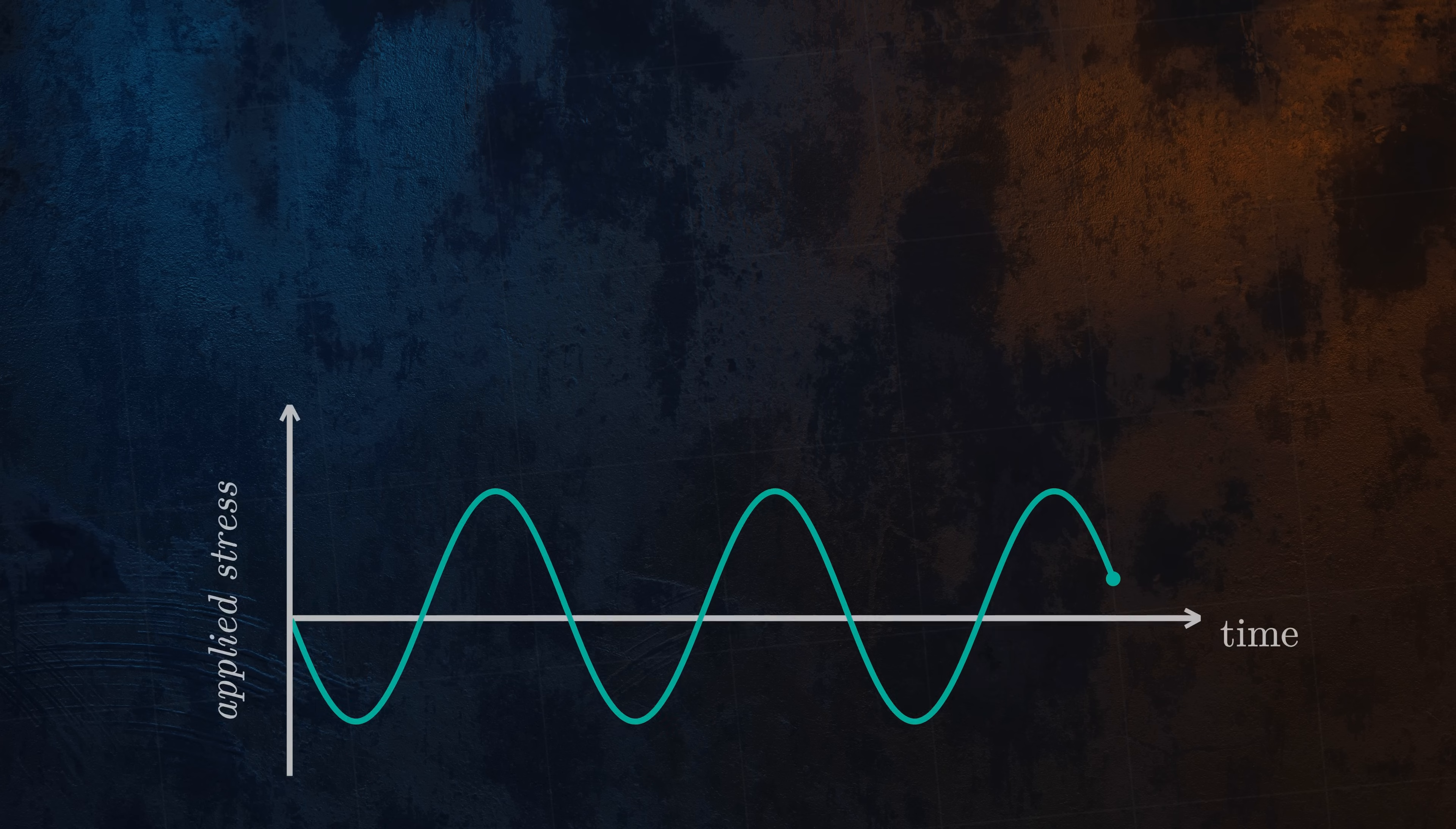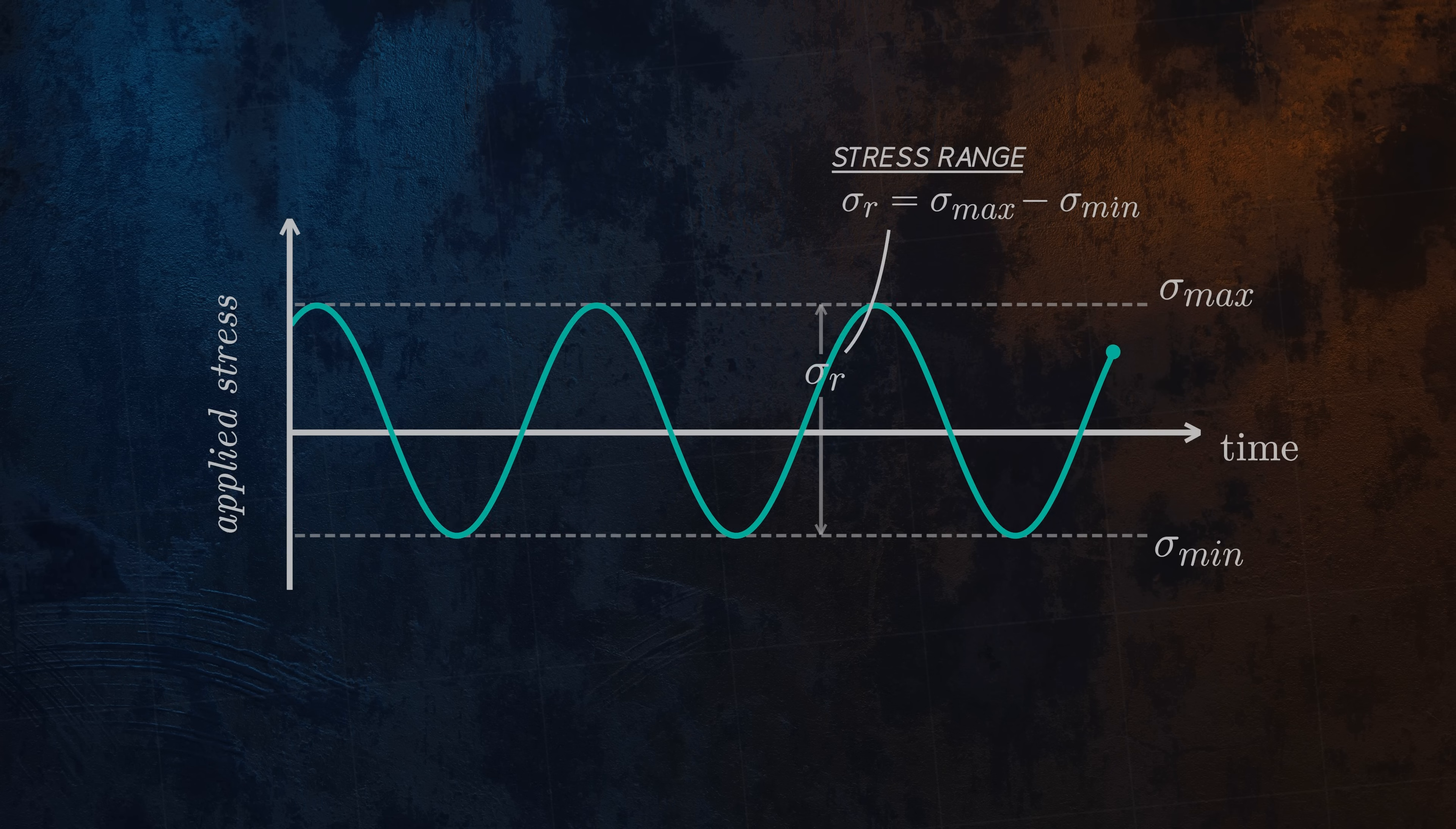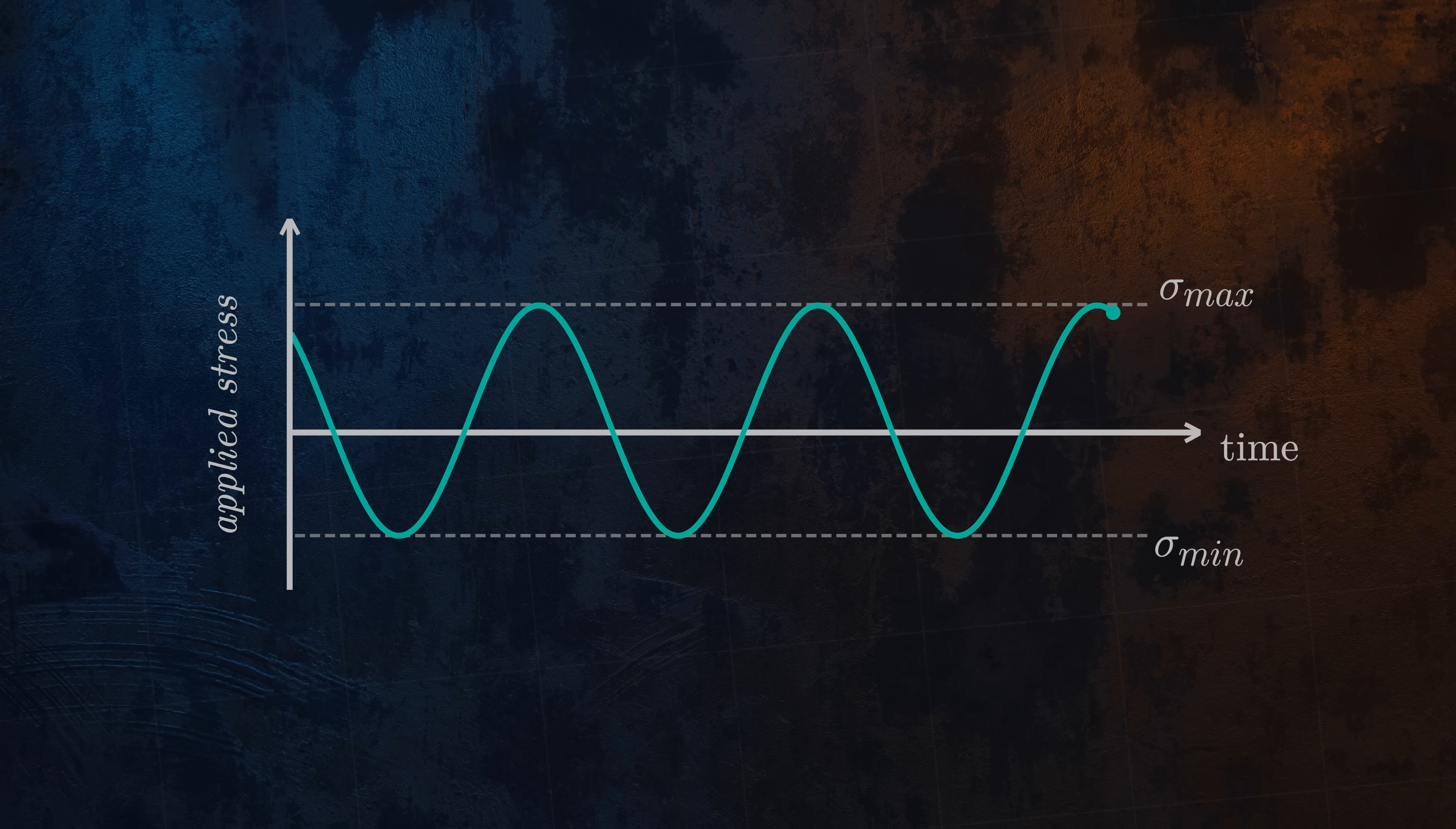Fatigue tests are usually run for constant amplitude, fully reversing cycles you can see here. The same stress magnitude is applied in tension and in compression. Let's define a few terms. The stress range is defined as the difference between the maximum and minimum stresses. The stress amplitude is defined as half of the stress range. The mean stress is the average of the maximum and minimum stresses. In this case, the mean stress is zero, but this is only one very specific type of loading.